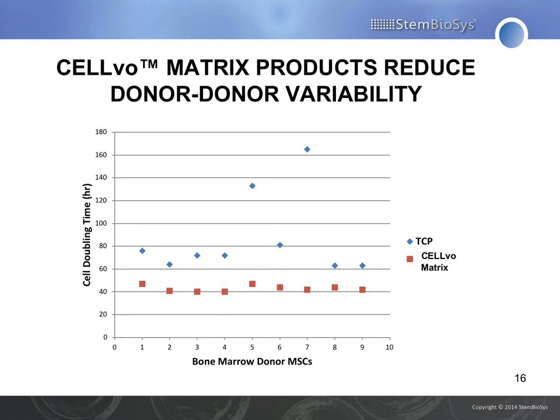This graph shows unique donors of bone marrow MSCs on the x-axis and cell doubling time on the y-axis. Consistently, we saw that cells grew faster on our matrix. I'm not really concerned with that because if cells are growing slower in one condition, you can just give them more time and they'll catch up. However, what's very interesting is that on Selvo matrix, cells from different donors had a much more consistent doubling time.